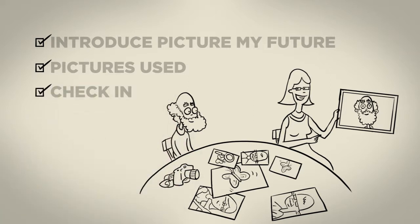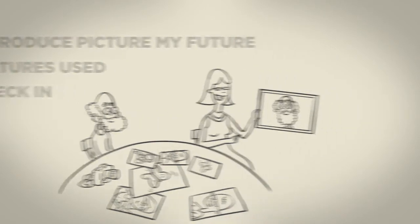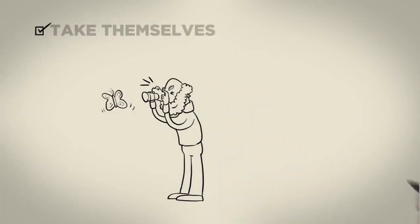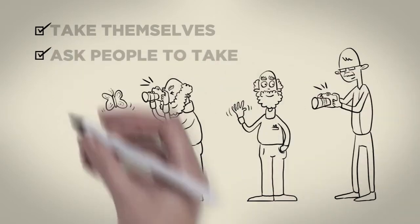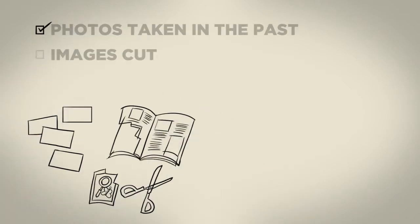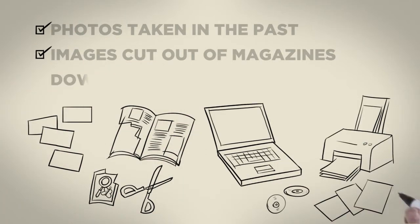Ask the support person to check in with the person every few days to see how they are going. The pictures that people use might be photos they take themselves or that they ask people to take for them. The pictures might also include photos that have been taken in the past, images they cut out of magazines, or download from the internet.